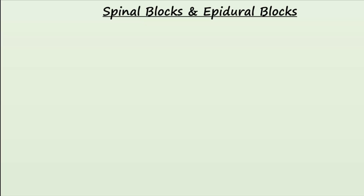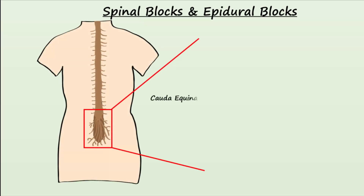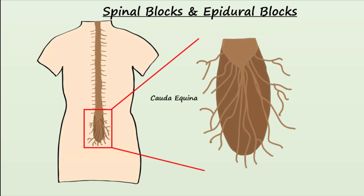At the bottom of the spinal cord we find the cauda equina. It is here that spinal nerves exit the spinal cord to innervate the pelvic region and lower extremities. The bottom of the spinal cord is the conus medullaris, located at the level of L2, or the second lumbar vertebra.